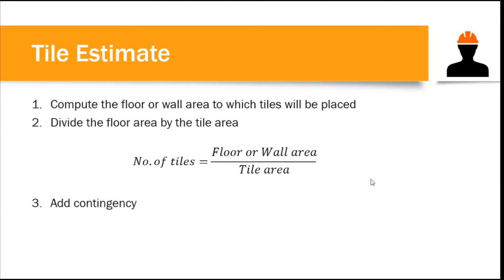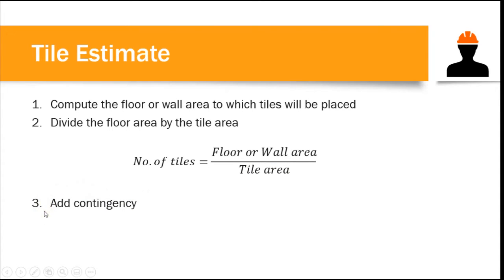In computing tiles, I have enumerated some steps. The first one is you compute the floor or wall area where your tiles will be placed. Compute the area of the floor or the wall where you will place the tiles. Then the second one, you divide the floor area by the tile area — the number of tiles equals the floor or wall area over the area of one tile. In case of emergency like breakage, you can add a contingency for extra tiles.